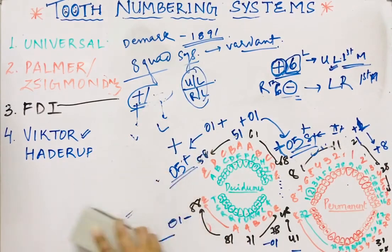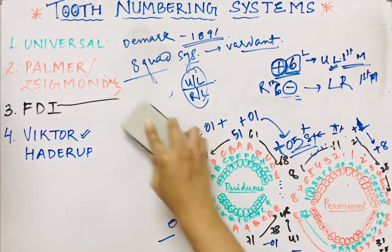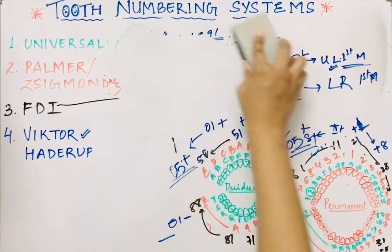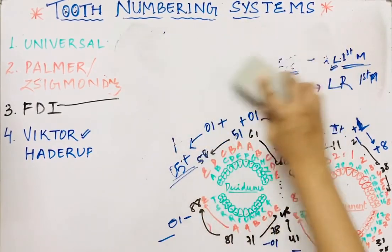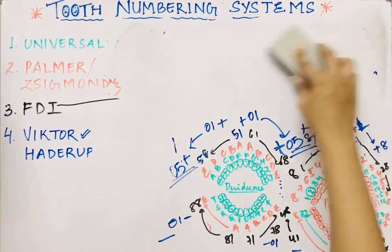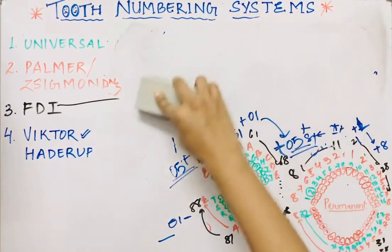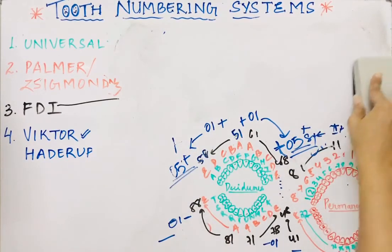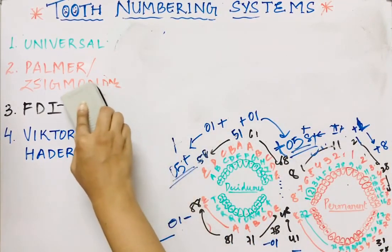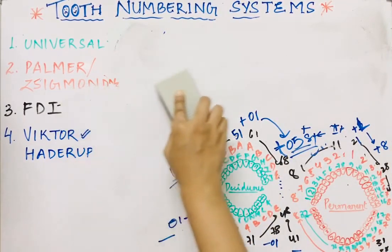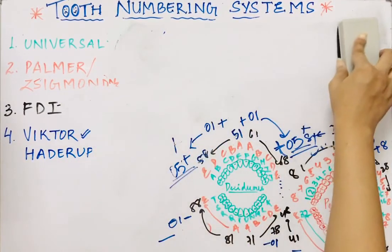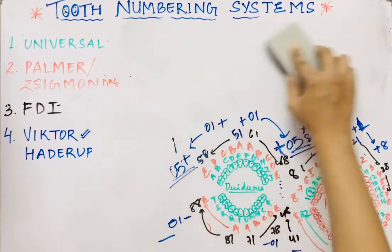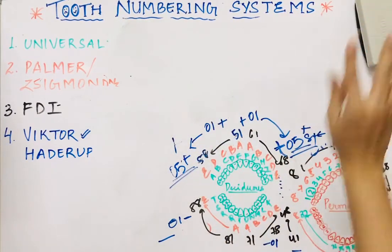Victor Haderup of Denmark gave this system in 1891, and it was just a variant of the eight-quadrant system. These are the four tooth numbering systems you need to mention when this question comes in the exam.